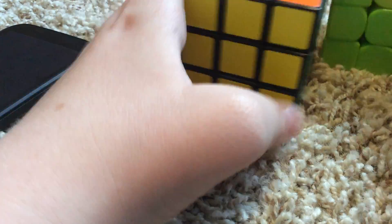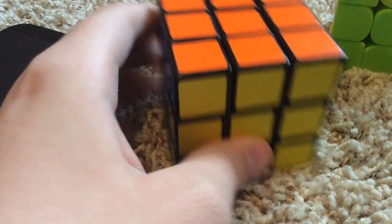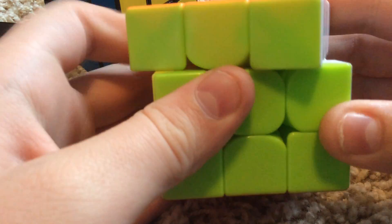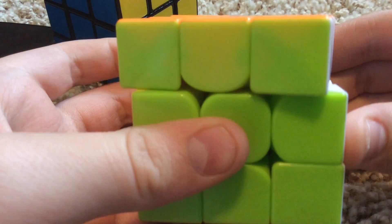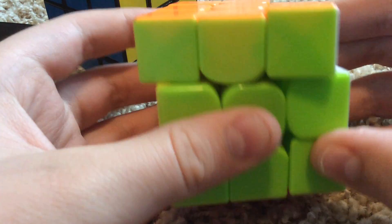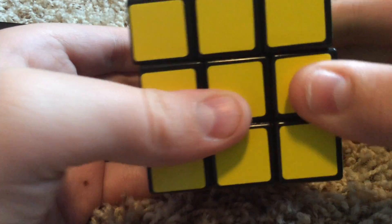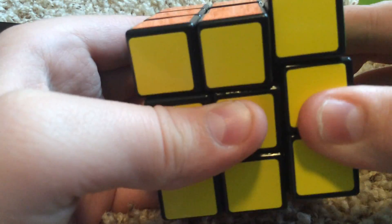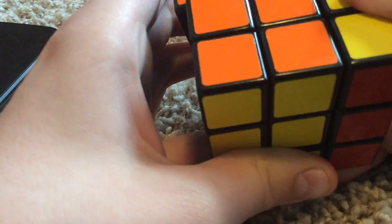Okay. So, the Guo Guan Yu Shao corner cuts at least this much with very little force. And the Rubik's brand corner cuts only about this much with a lot of force.